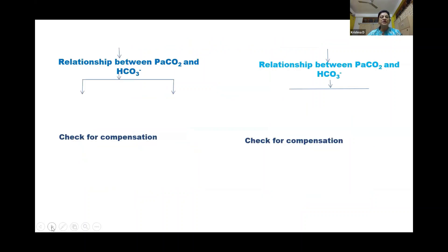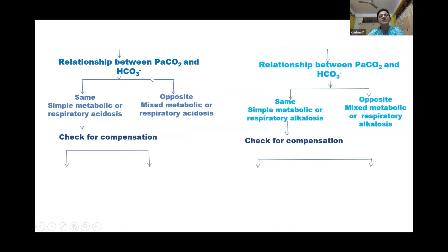Then we have to check for the adjacency between carbon dioxide and bicarbonate — the direction of change of CO2 and bicarbonate. If the direction of change is the same, either both increasing or both decreasing, it means simple metabolic or respiratory acidosis. But if the direction of change is opposite — CO2 increasing and bicarbonate also increasing — it means mixed metabolic or respiratory acidosis.